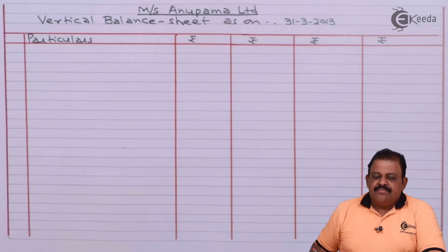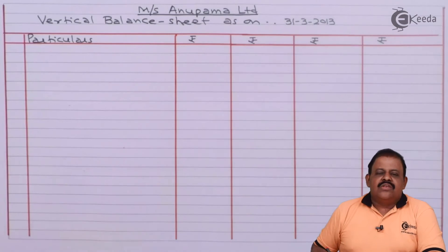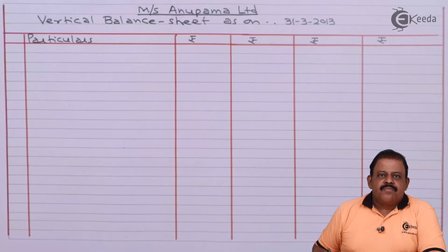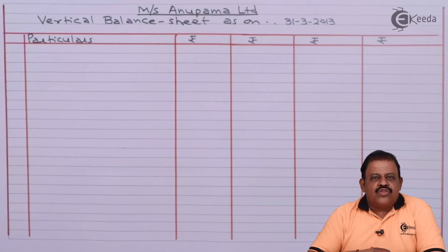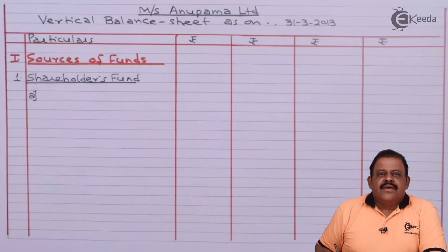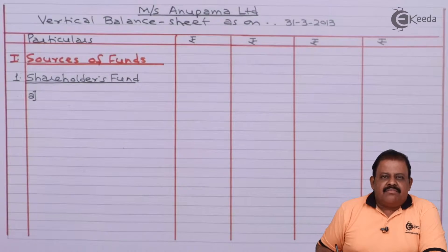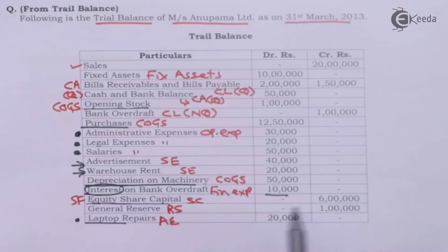Messrs Anupama Ltd. Vertical Balance Sheet as on 31st March 2013. First part is sources of funds. Under shareholders' fund, first we have share capital: equity share capital rupees 6 lakhs.